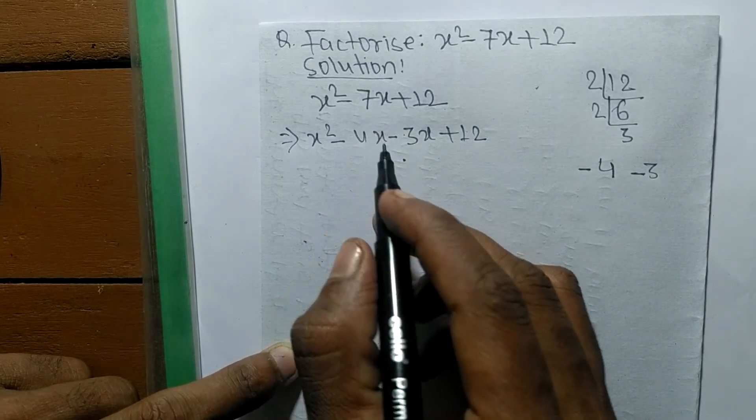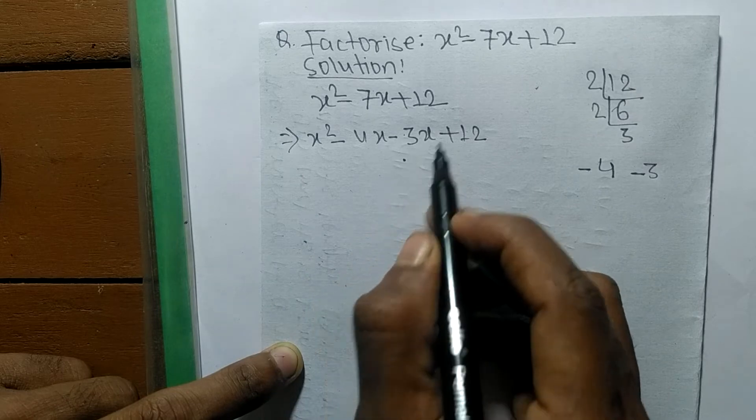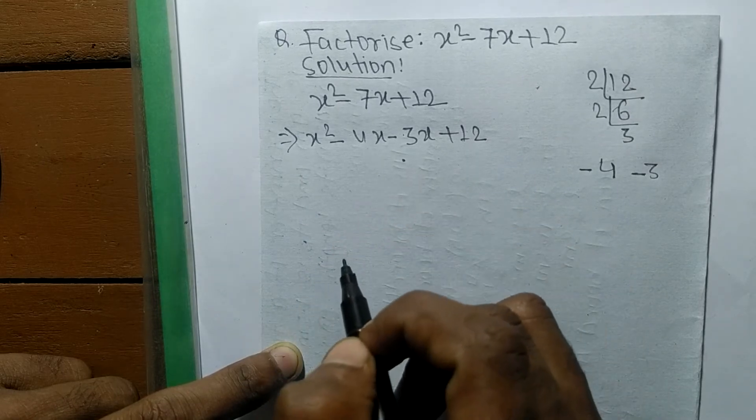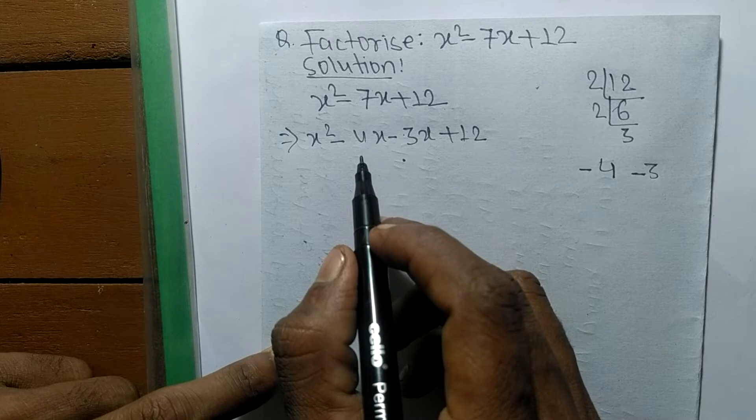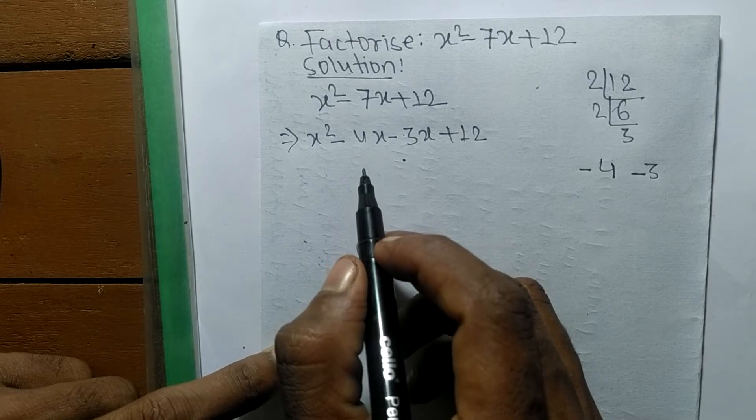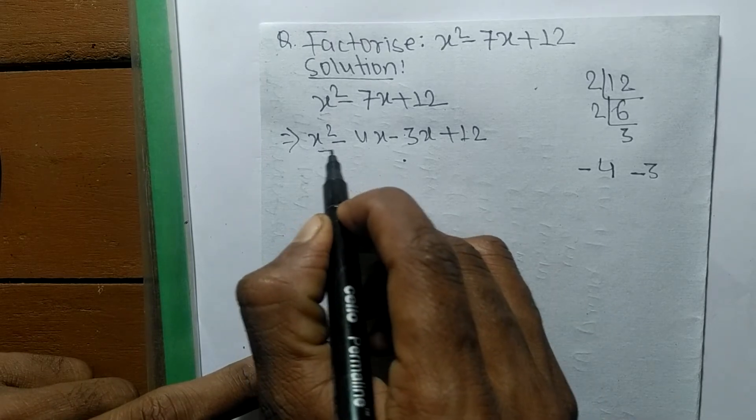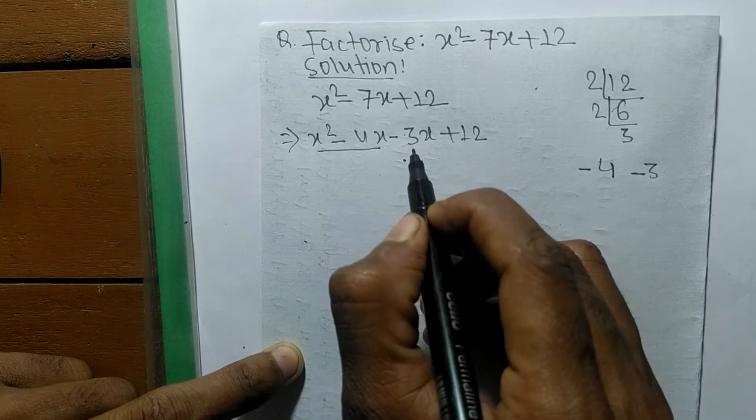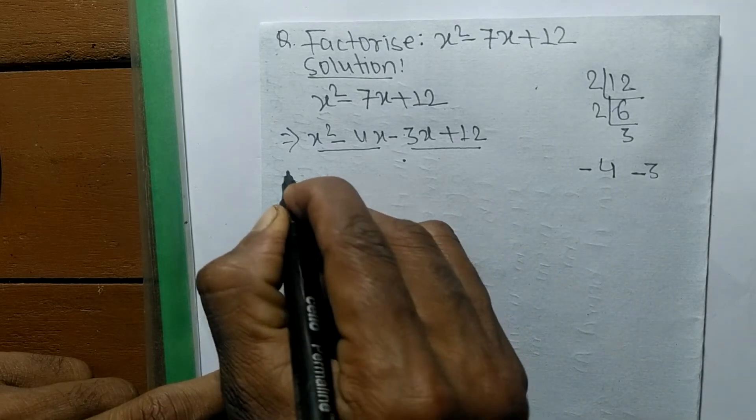-4x minus 3x equals -7x, and 4 times 3 equals 12. Now we have to separate these expressions into two pairs. These both form the first pair, and these both form the second pair.